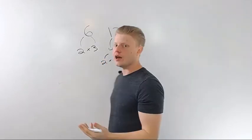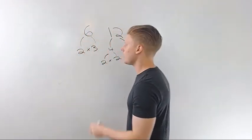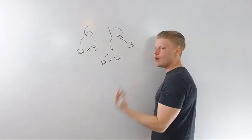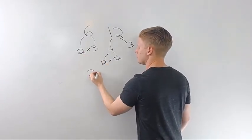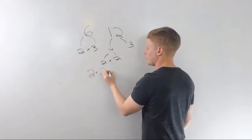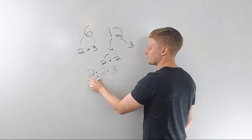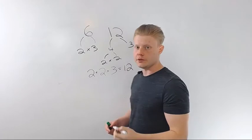Now, on GCF, we take the least occurrence of each unique prime number. On LCM, we take most occurrences. So, I've got one 2, I've got two 2's, I'll take both of those 2's. I've got 1, 3, 1, 3, I'll just take 1. Multiply those together, 2 times 2 is 4, times 3 is 12. Easy peasy.